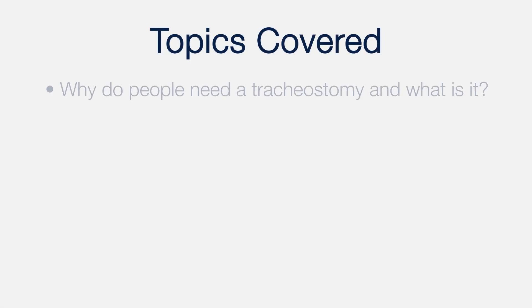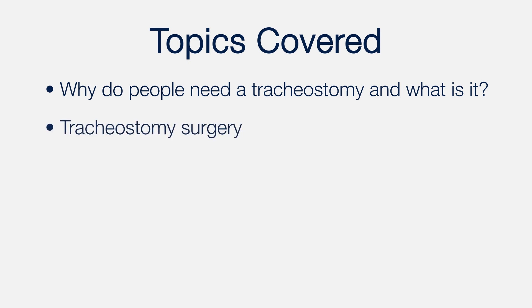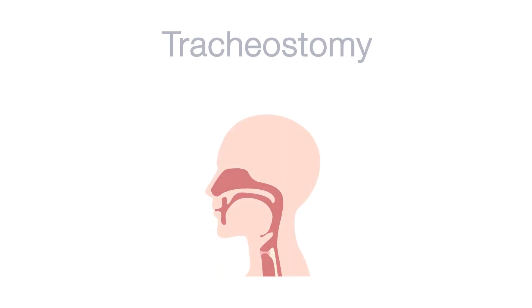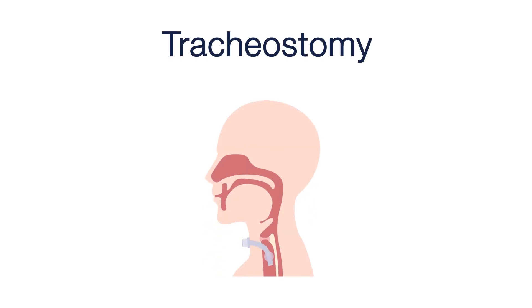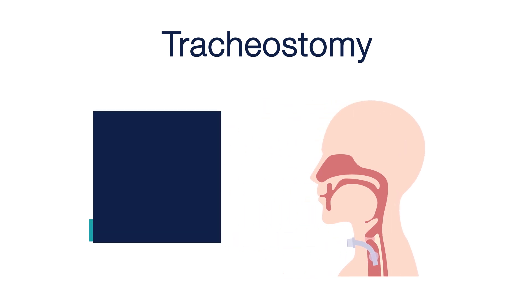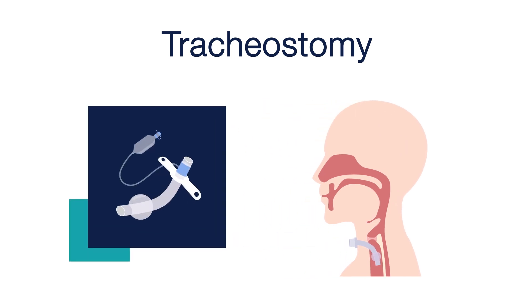We will start by talking about why people need a trach and exactly what it is. Next, we will describe the surgical procedure. And finally, we will discuss the basics of caring for a tracheostomy. So first, let's go over what a tracheostomy is. A tracheostomy is both the procedure where the tube is placed through the windpipe to establish an airway, and it's the name given to the tube itself.